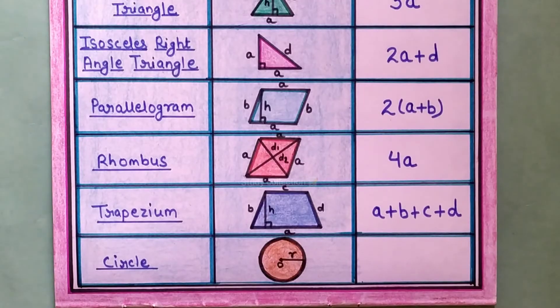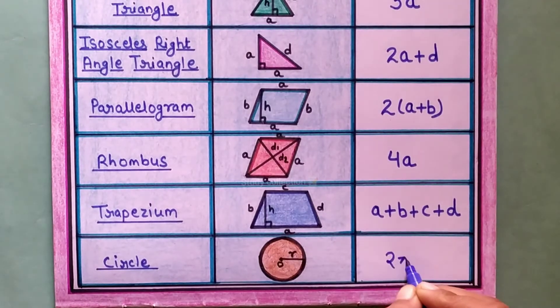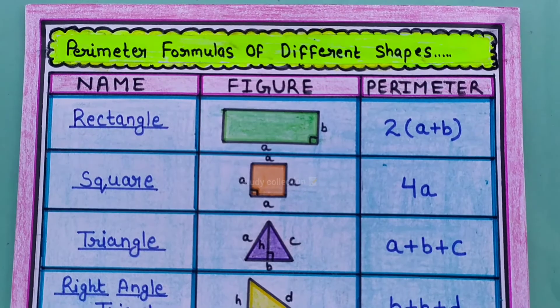And last shape is circle. Its perimeter formula is 2 pi R.